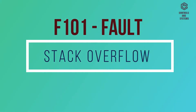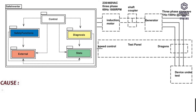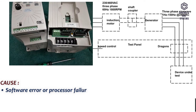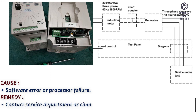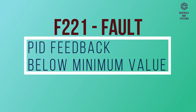F101 Fault: stack overflow. Cause: software error or processor failure. Remedy: contact service department or change inverter.